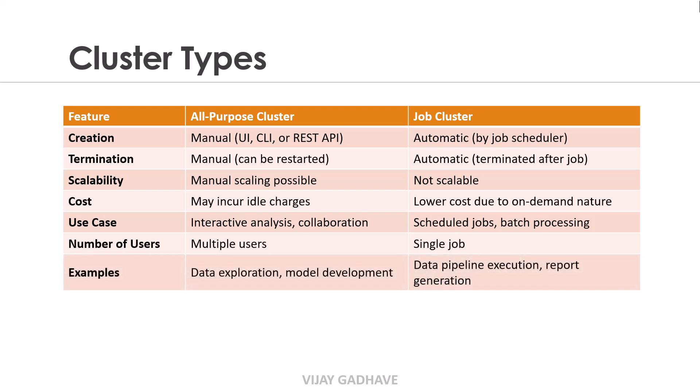Let us see some examples. The All-Purpose Cluster is used in data exploration and model development, which require an interactive environment. Whereas the Job Cluster is commonly used for data pipeline execution or report generation, which can be automated and require no manual interaction.